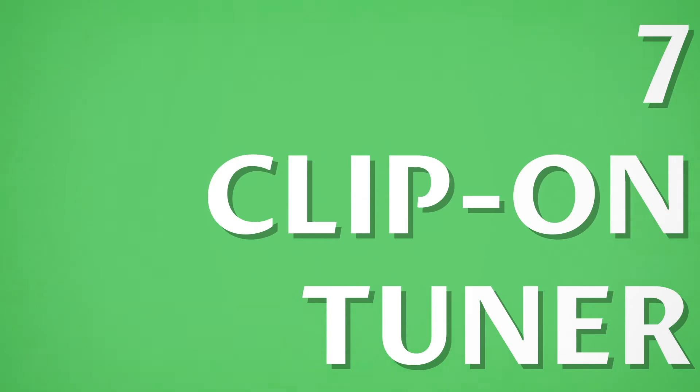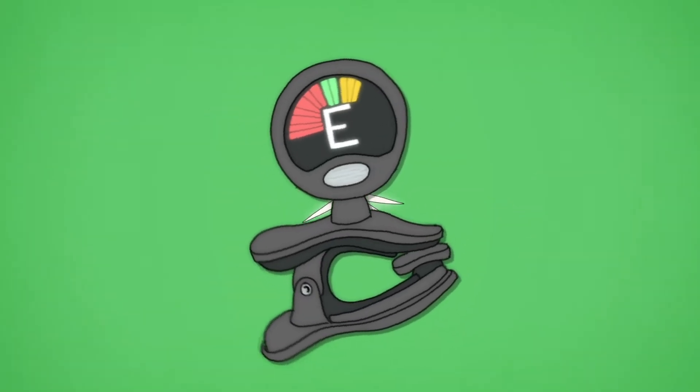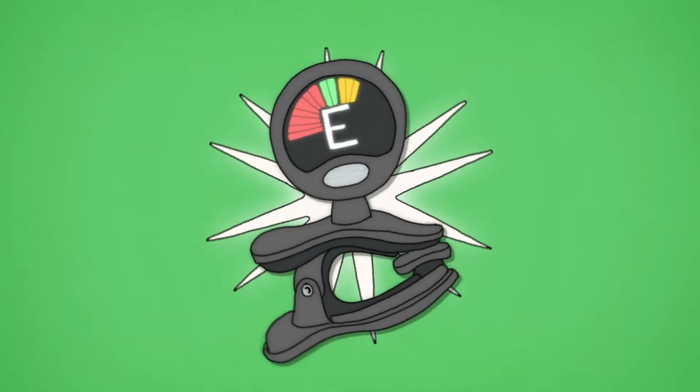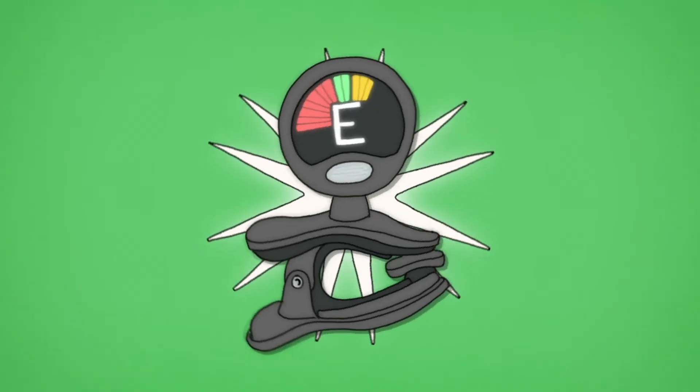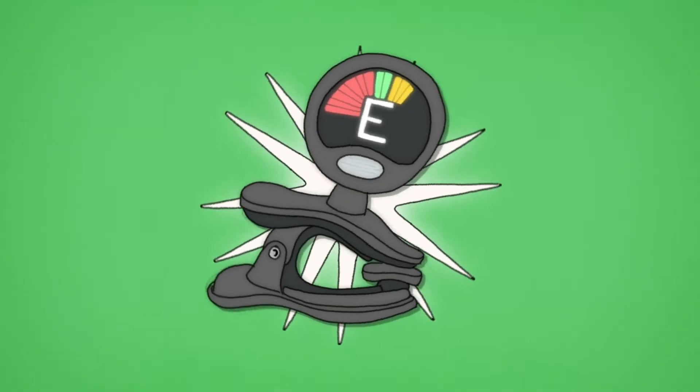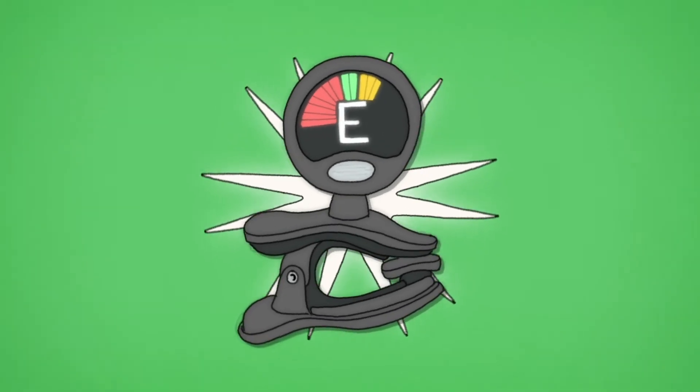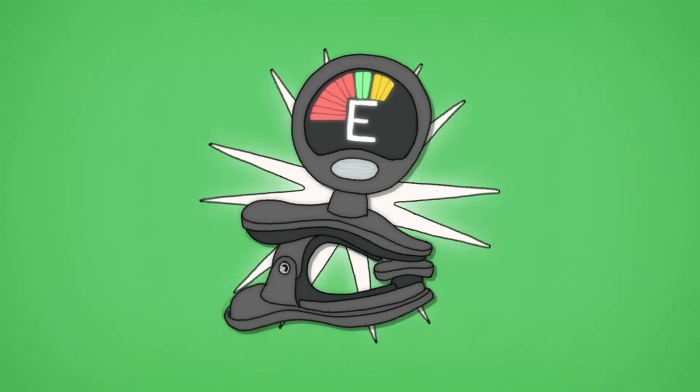Number 7: Clip-on tuner. A clip-on tuner is a great type of guitar tuner to have. Clip-on tuners are usually cheaper than foot switch tuners and they are still very accurate. Clip-on tuners also allow you to tune silently or at a low volume, and you have the added bonus that you'll probably never forget it because it's attached to your guitar.